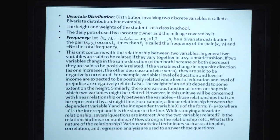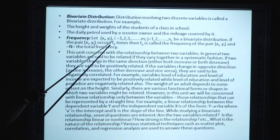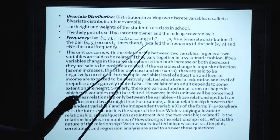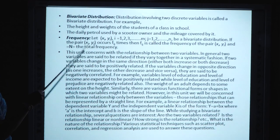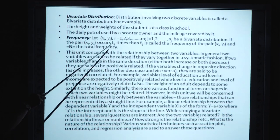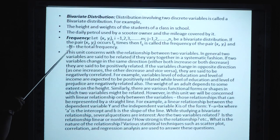अब Bivariate Data, Bivariate Distribution क्या होता है? अगर पहले के Lectures में हमने एक Frequency को लेकर Distribution define किया था, तो वो Simple Distribution था। यहाँ पर हम दो Frequencies को लेके चलेंगे — suppose X_i, Y_i, जहाँ i की values 1, 2 से M तक और j की values 1, 2 से M तक हैं। इनका pairwise distribution X_i, Y_i का हमारा Bivariate Distribution कहलाता है, और corresponding frequency F_ij हमारी Paired Frequency कहलाती है.